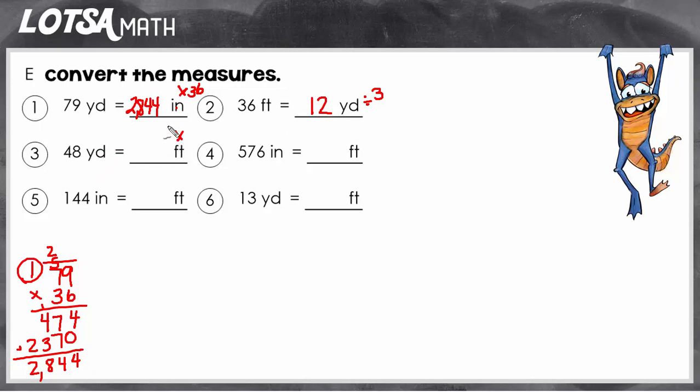Well, the number of feet in a yard. And there are three feet in a yard, so we have to multiply by three. So I have to do 48 times three. So the answer is 144.